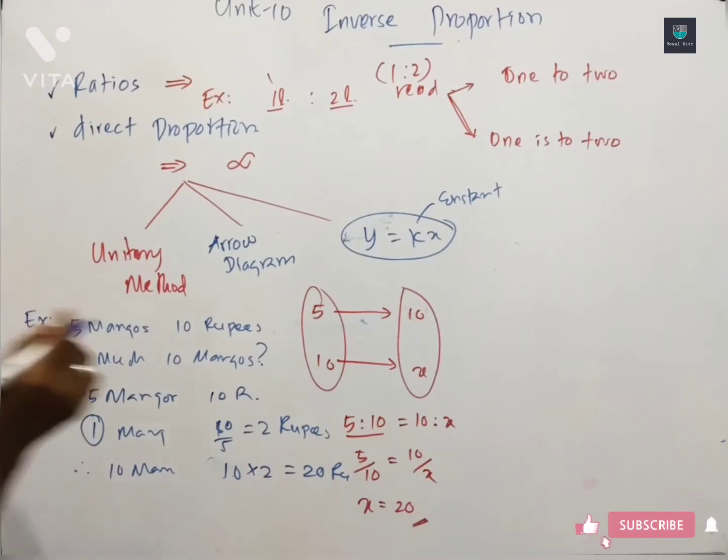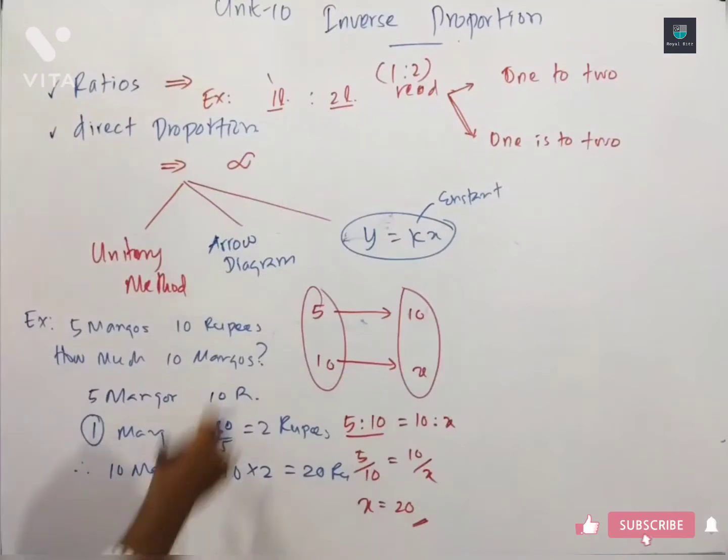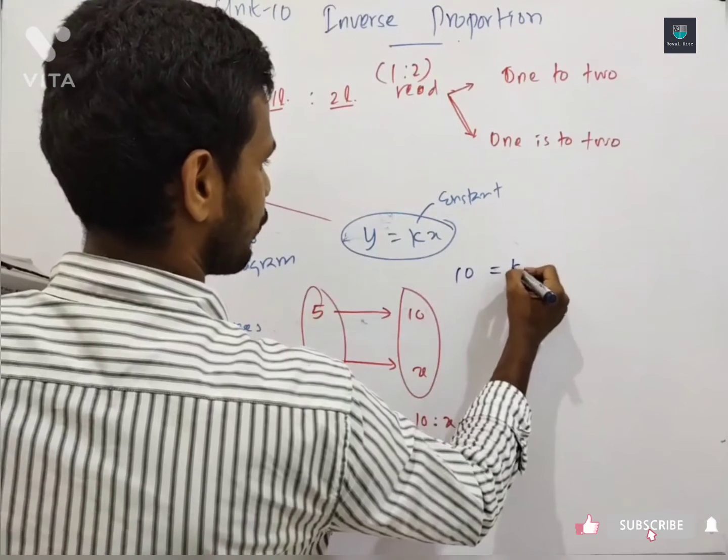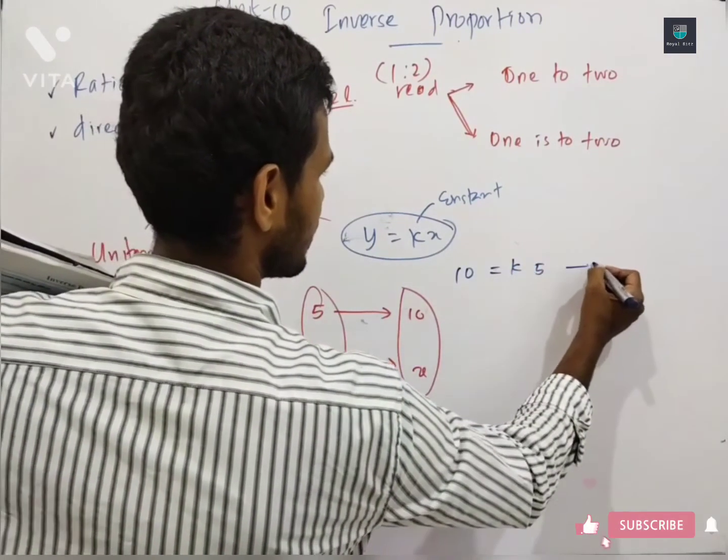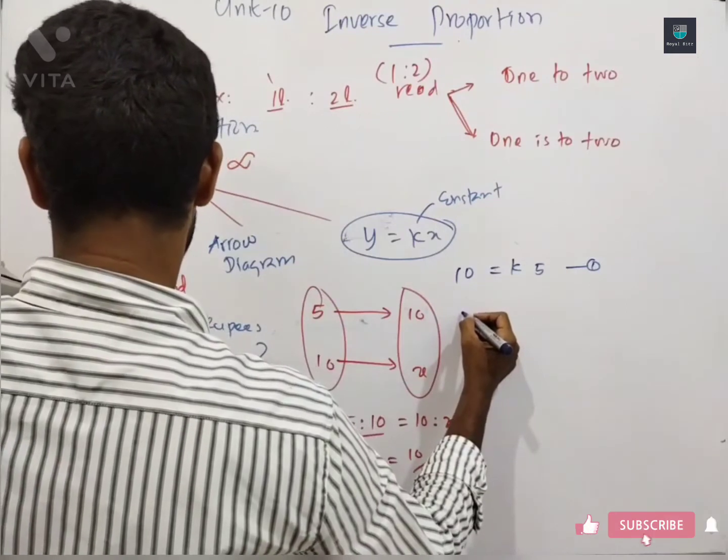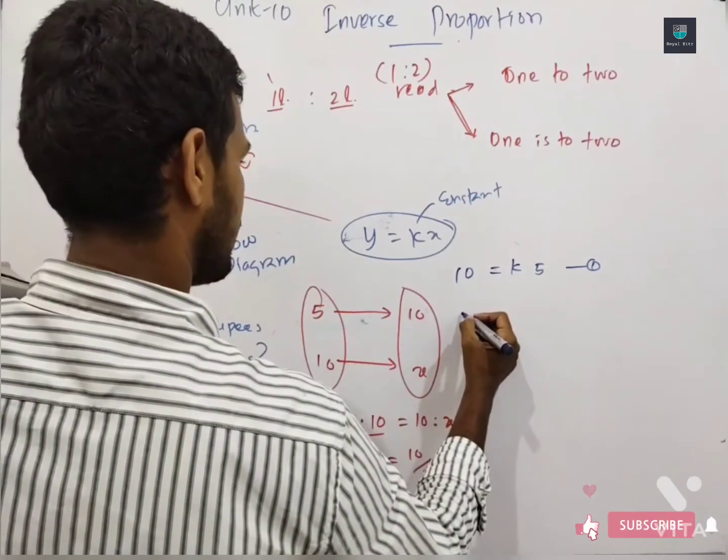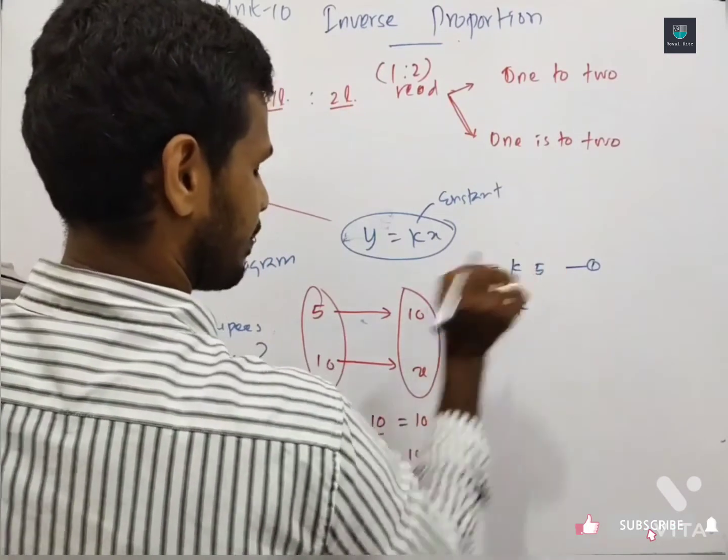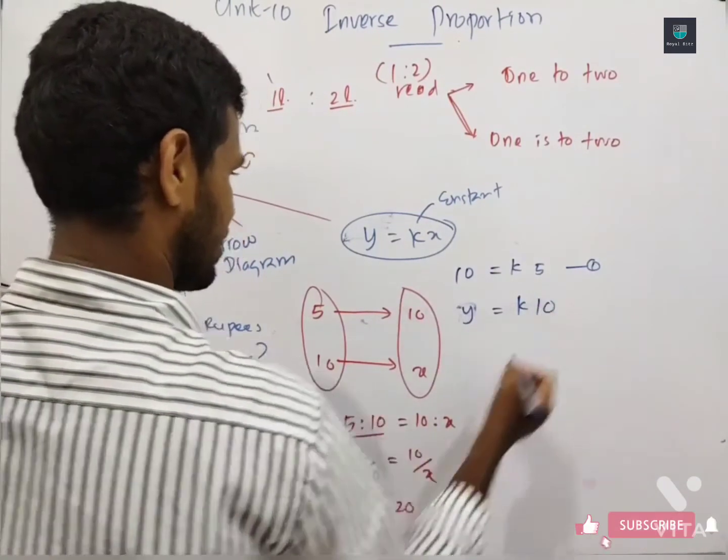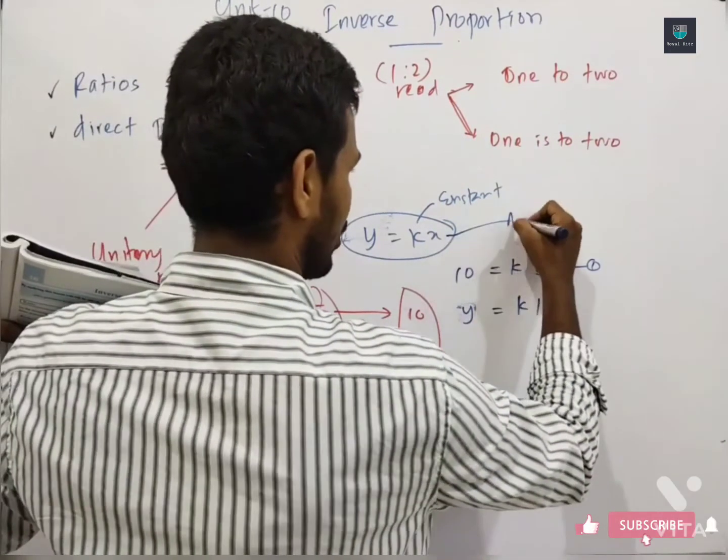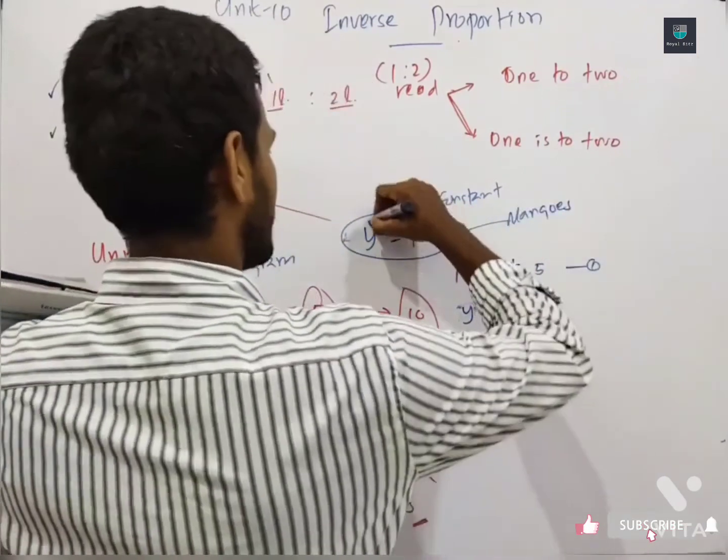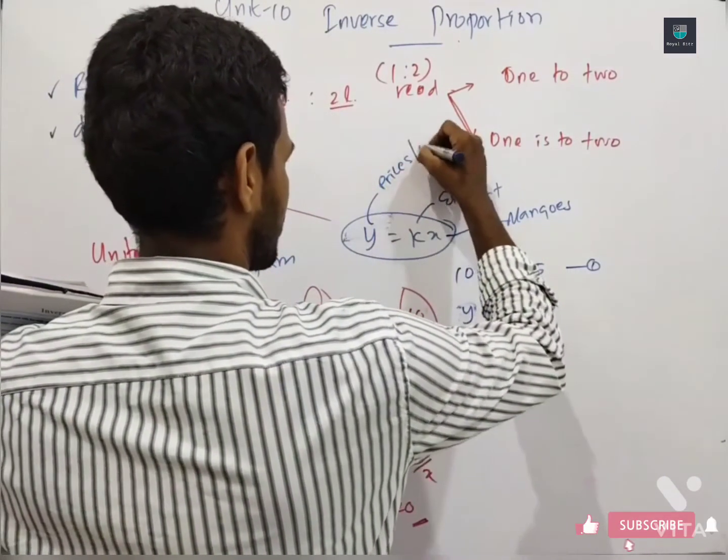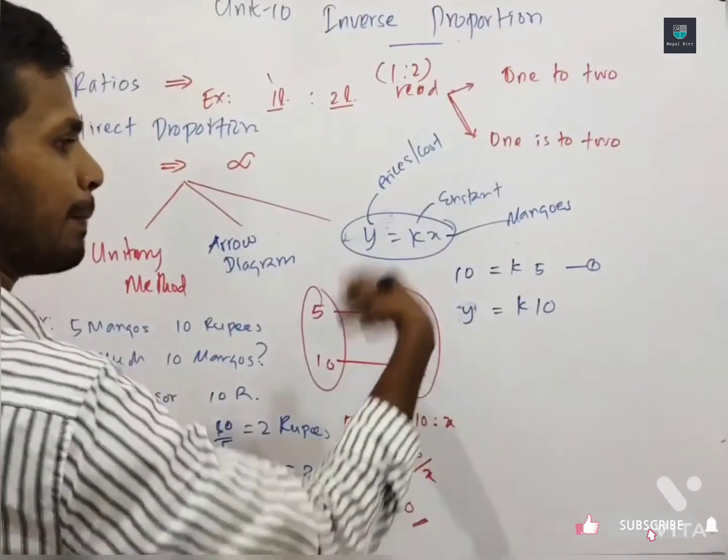So y is equal to kx. For example, k is constant. I am buying ten mangoes for 5 rupees. So y is the price or cost, k is constant, k is same, but here x is 10. So here x is mango, I am representing the mangoes. This is the price or cost. This is constant.